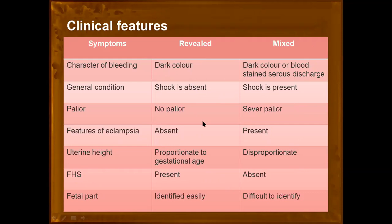Fetal effervescence is present in the revealed type but absent in the mixed type. Fetal parts can be identified easily in the revealed type but are difficult to identify in mixed or concealed. This is because the collection of blood behind the placenta makes fetal heart sounds inaudible and fetal parts difficult to palpate. All these findings — disproportionate uterine height, absent fetal sounds, and difficulty palpating fetal parts — are due to the collection of blood behind the placenta.